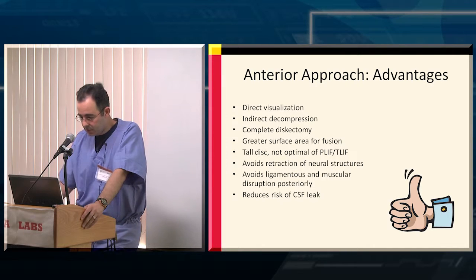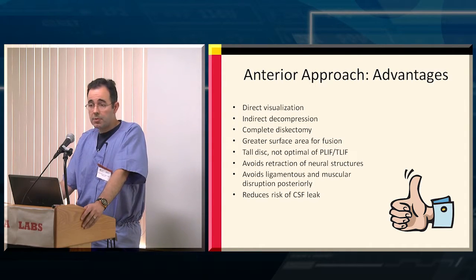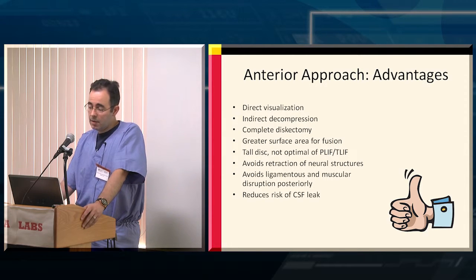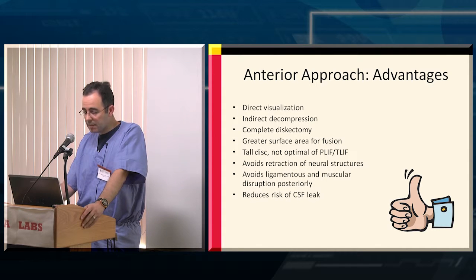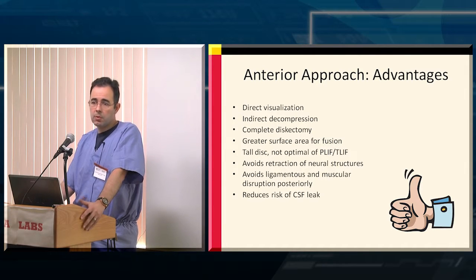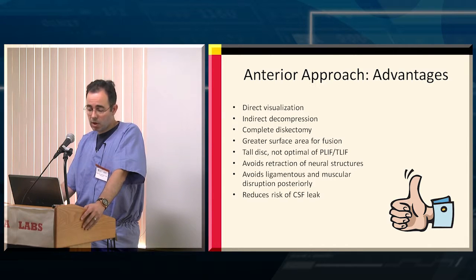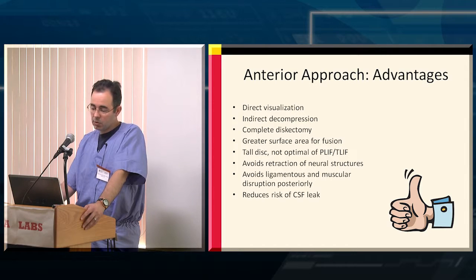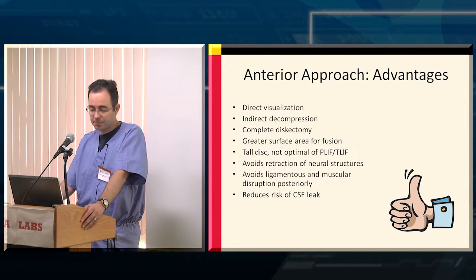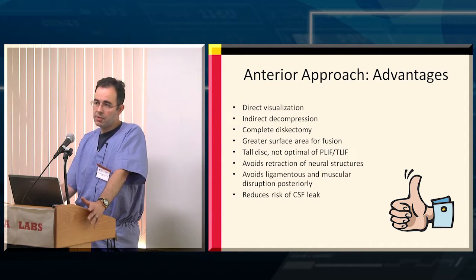You have a much larger surface area for bone healing when you compare this to TLIFs or PLIFs — definitely a big advantage. There's a greater opportunity for indirect decompression, a greater opportunity to remove more disc material and achieve better fusion surface area. When dealing with a very tall disc space, a PLIF or TLIF becomes a less stable construct, whereas the lateral cage is a lot stronger. And you don't have to retract the neural structures directly — you're not directly retracting the dura, so there's less chance of a CSF leak.